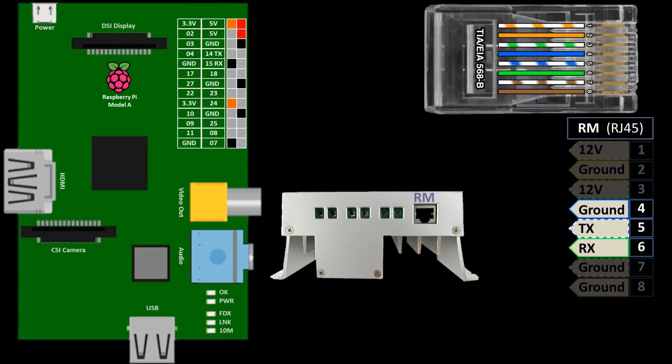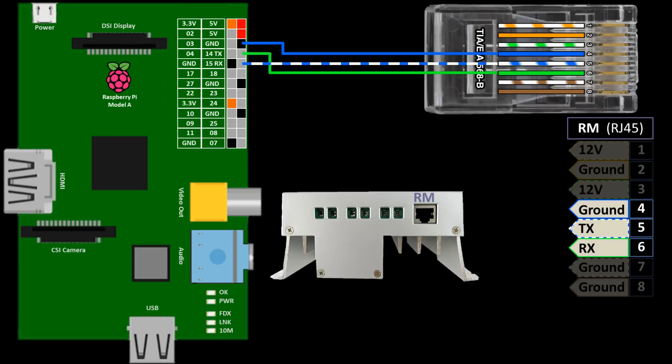To talk to the Pi we only need to connect the ground, TX and RX. RJ45 pin 4 is connected to a ground on the Pi. TX pin 5 is connected to GPIO 15, which is RX on the Pi. RX pin 6 is connected to GPIO 14 on the Pi, which is TX — so transmit goes to receive and receive goes to transmit.